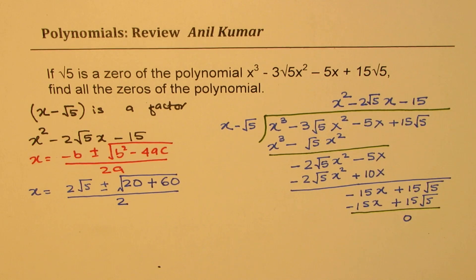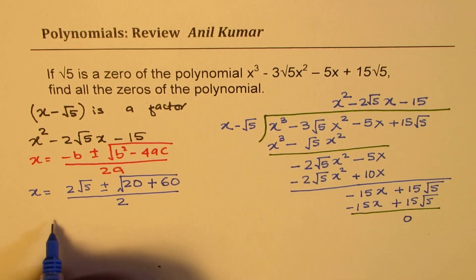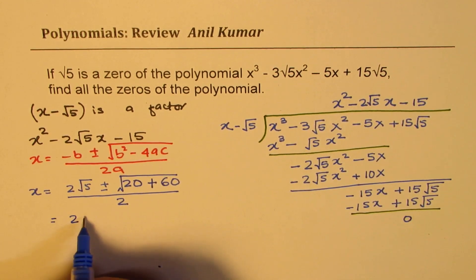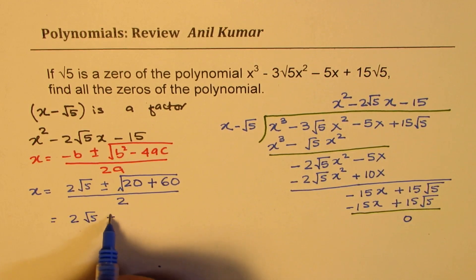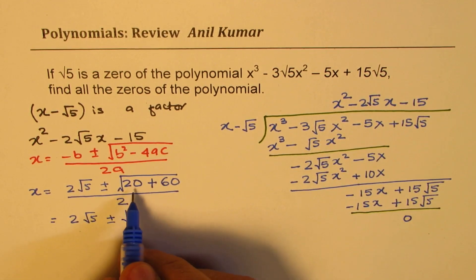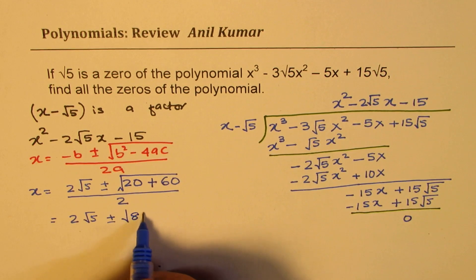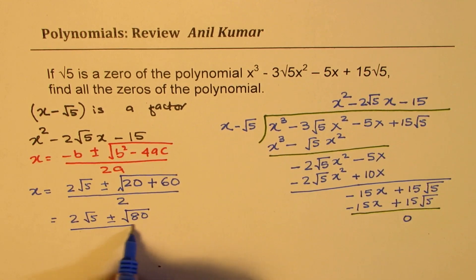Divided by 2 times a, so we get 2. Now, that could be written as 2 square root 5 plus minus square root of 80 over 2.